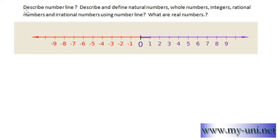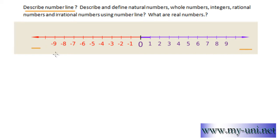So we've described the number line briefly. Let's look at some of its features to understand it a little better. The first feature: notice that the number line has arrows in both directions. These arrows indicate infinity — it means that the line does not end in either direction.